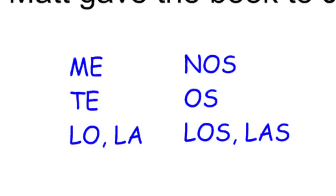So if lo and la mean 'it,' what is the plural of it? Students sometimes say 'its,' but no — it changes to 'them.' So: me, te, lo, la = me, you, it; nos, os, los, las = us, you guys, them. And lo is the masculine form, la is the feminine.